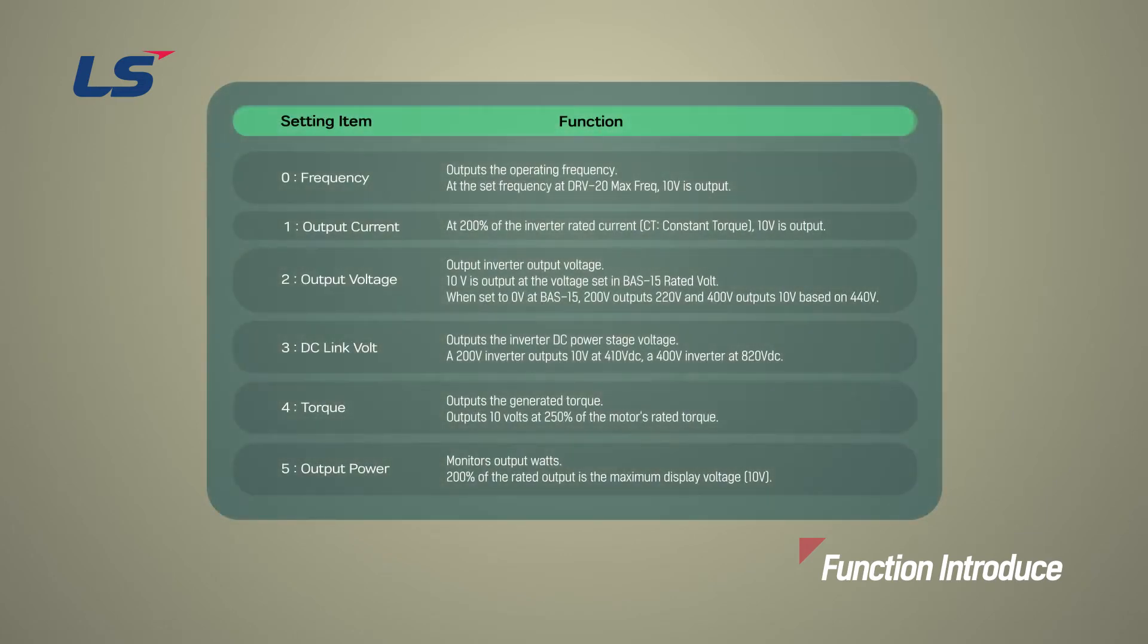The concept of the analog output is the same. The multifunctional analog output terminals, such as the AO terminal, allows inverter operation information, such as output frequency and output current, to be converted to voltage or current.